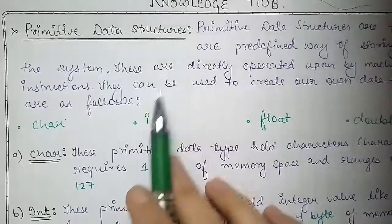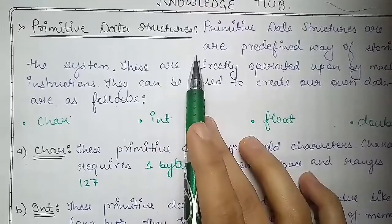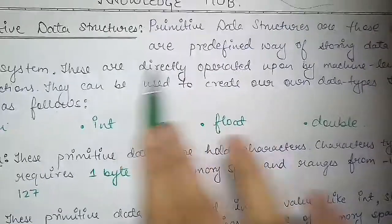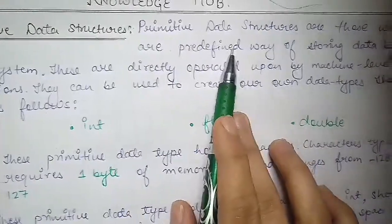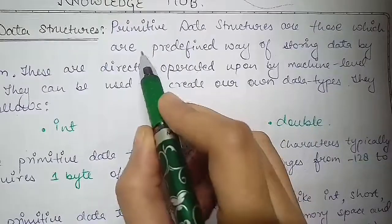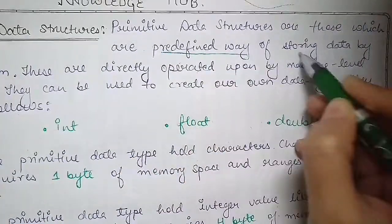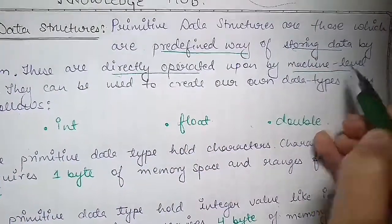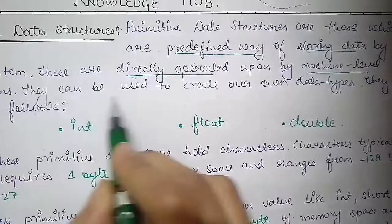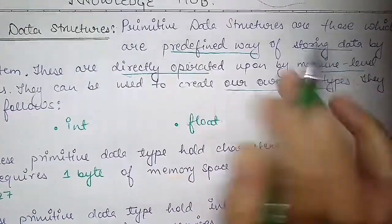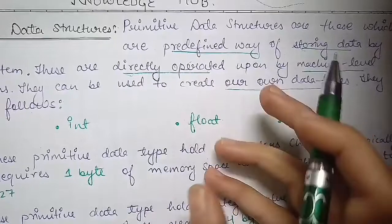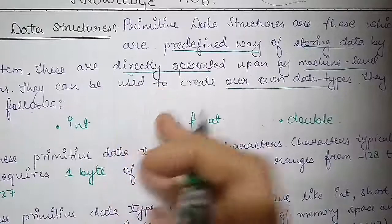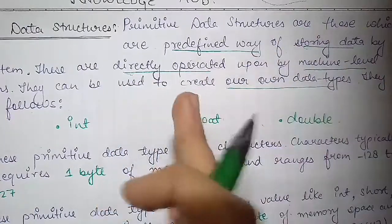This is that video. You can see it in the previous class when I told you what primitive data structures are - one of the basic data structures. Here is a definition you can read: Primitive data structures are those which are predefined way of storing data by the system. They are directly operated by machine level instructions. They can be used to create our own data types. This basically means these are our basic data structures which, if we create non-primitive data types, then by using primitive data structures we can create non-primitive data structures.